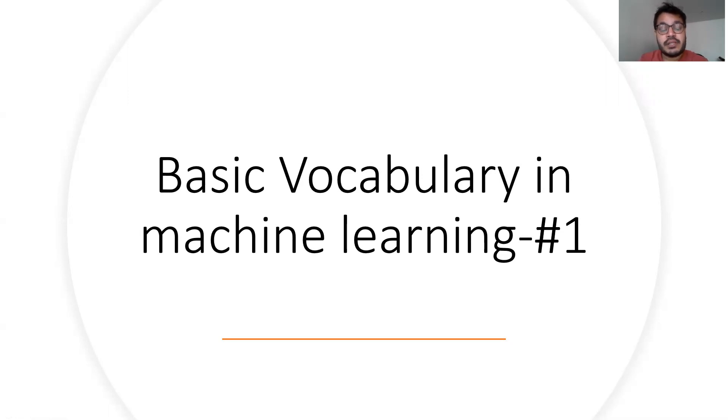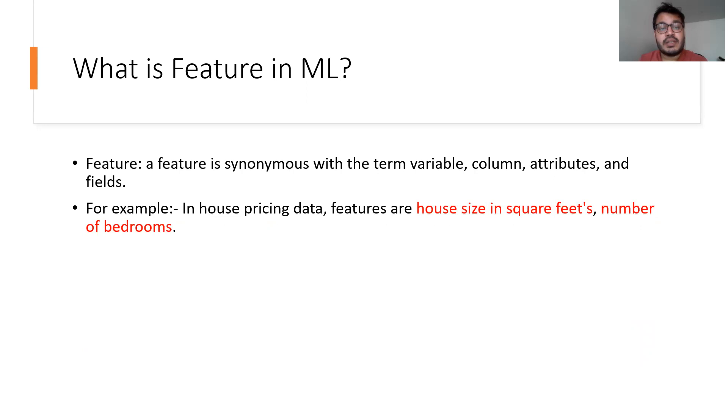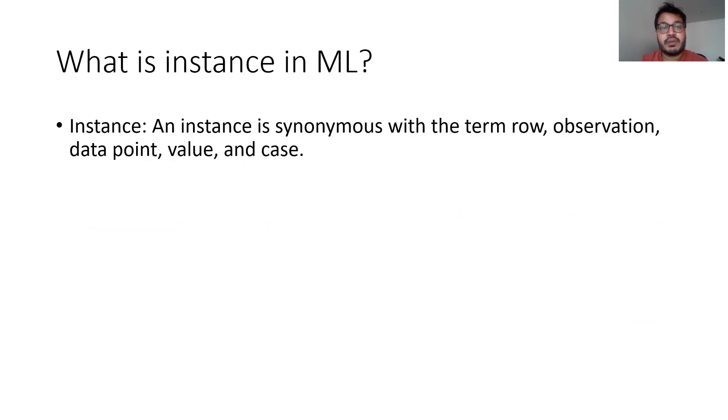So let's start. What is a feature in machine learning? A feature is synonymous with the term variable, columns, attributes, or fields. This terminology is usually referred to as feature in machine learning. For example, in house pricing data, my features would be the house size in square feet, number of bedrooms, and so on.